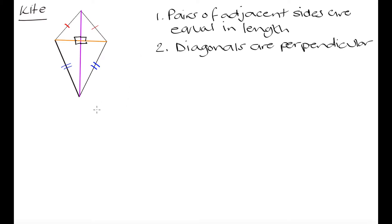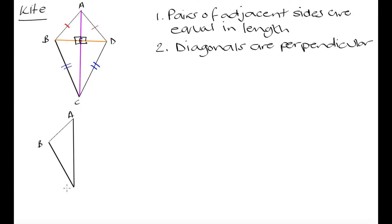So how could we go about proving that in a kite these diagonals are going to be perpendicular? The first thing we can do is break up our kite into two triangles. I'm going to start by labeling these points: A, B, C, and D, and we can label the intersection point as E. If we start off by making a triangle composed of A, B, and C, we know that side AB is going to have the red value, and side BC is going to have the blue value.